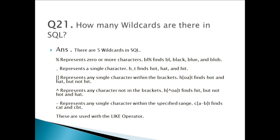Question twenty-one: How many wildcards are there? There are five wildcards in SQL. % represents zero or more characters — for example, BL% finds BL, BLACK, BLUE, and BLOCK. _ (underscore) represents a single character — H_T finds HOT, HAT, and HEAT. Square brackets represent any single character within the brackets — H[OA]T finds HOT and HAT but not HEAT.